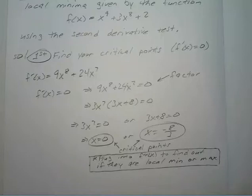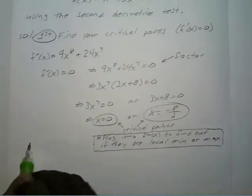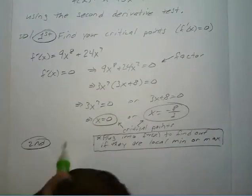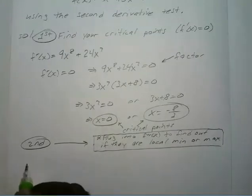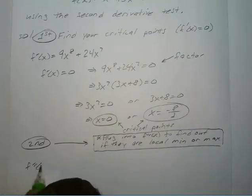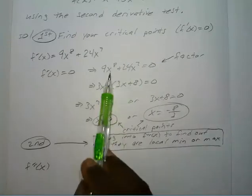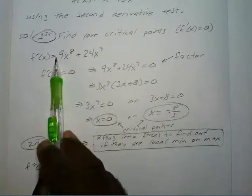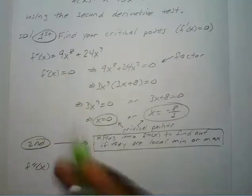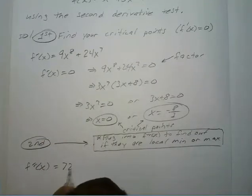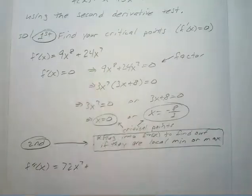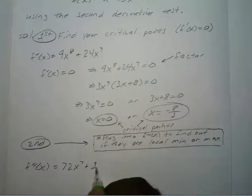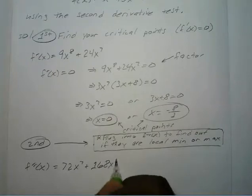To do that, we have to find our second derivative. Taking the derivative of f prime: bring down the 8th to get 72x to the 7th, plus bringing down the 7th gives 168x to the 6th power. We can factor this: 24x to the 6th power times 3x plus 7.